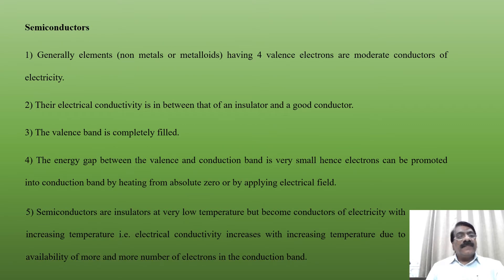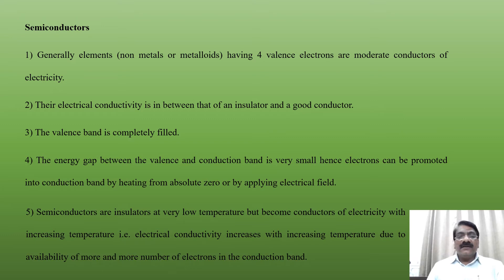Semiconductors: elements — non-metals or metalloids — having four valence electrons are moderate conductors of electricity and they are used as semiconductors. Semiconductors have electrical conductivity lying in between that of an insulator and a good conductor. Third, the valence band is completely filled. Fourth, the energy gap between the valence and conduction band is very small, hence electrons can be promoted into the conduction band by heating from absolute zero or by applying an electric field.